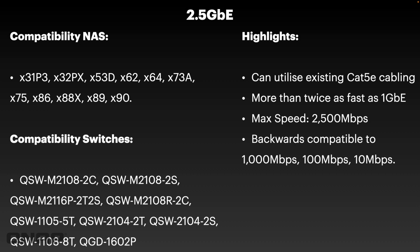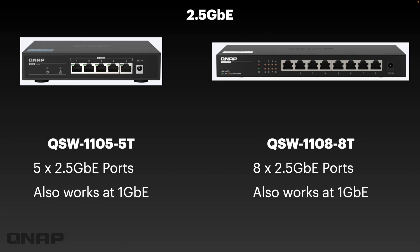Whilst there are a lot of switches with 2.5 gig compatibility, I've picked a couple out to show you what they look like — our best-selling options. These are our five-port and eight-port options, both fairly simple unmanaged switches where every port is either at 2.5 gig — five or eight of them. Every single port will also work at 1 GbE. On the eight-bay one, if the port light is orange it means you're working at a speed slower than 2.5 gig; if it's green, you're working at 2.5 gig.